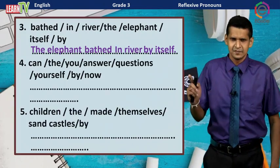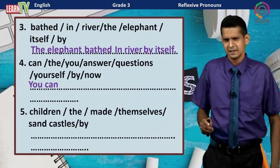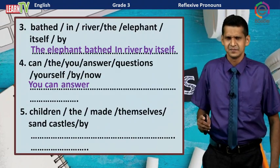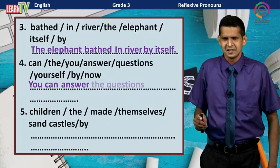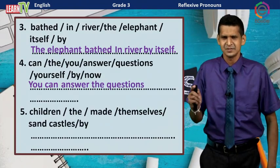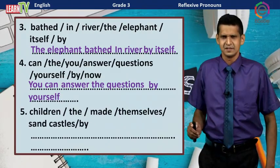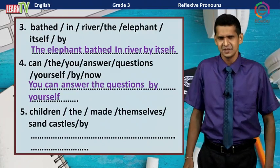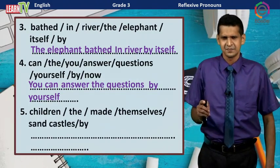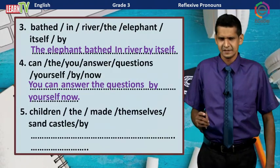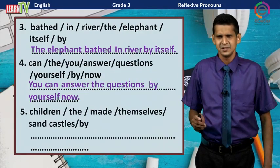Number four: The subject is 'you,' the verb is 'can answer,' and the object is 'the questions.' The sentence is: You can answer the questions by yourself now.